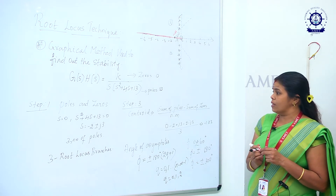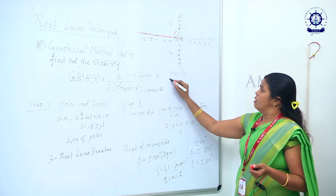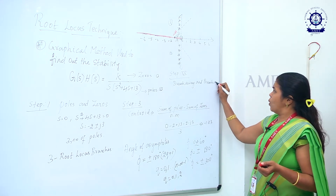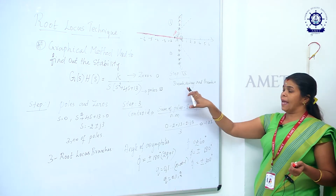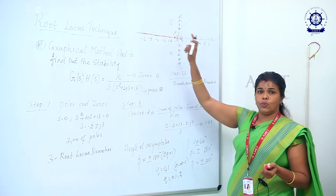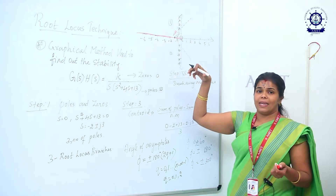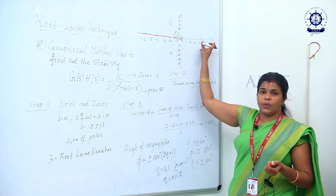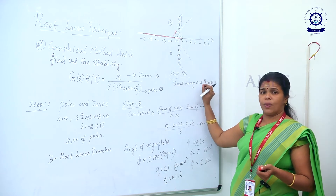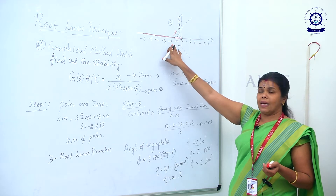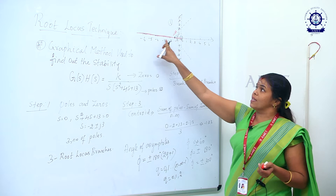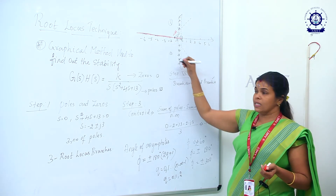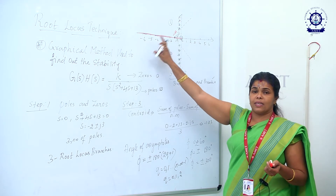Step 4 is to find the break away and break-in points. Break away points occur when two poles are on the negative real axis, and break-in points occur when two zeros are there. In this system, there is only one pole at the origin and no poles or zeros on the negative real axis, so there are no break away or break-in points.